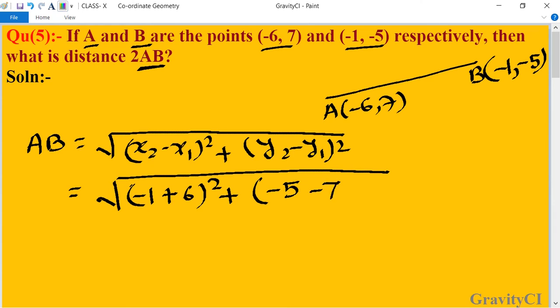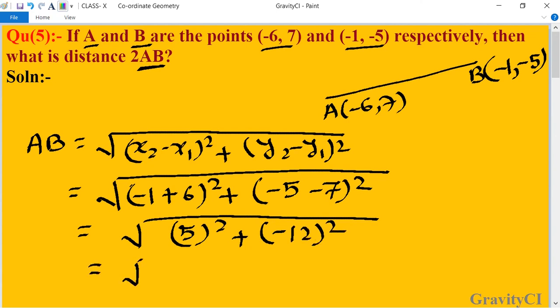This equals √[5² + (-12)²] = √[25 + 144] = √169 = 13 units.